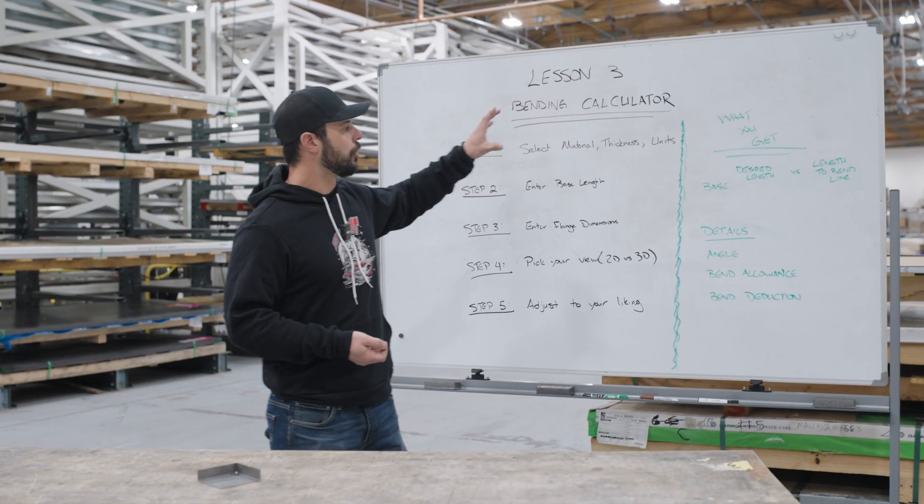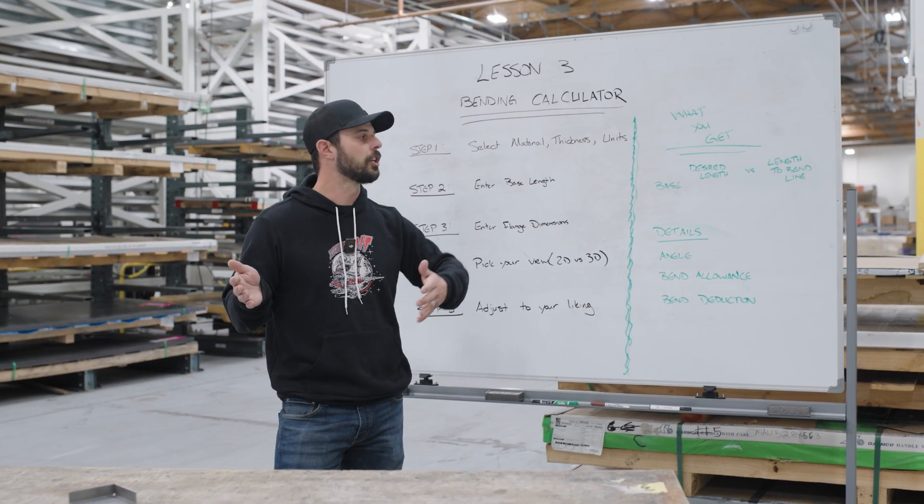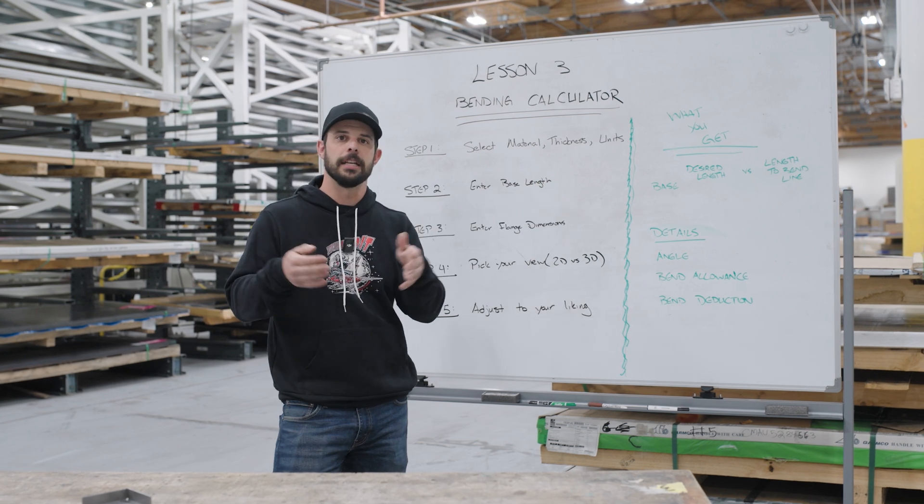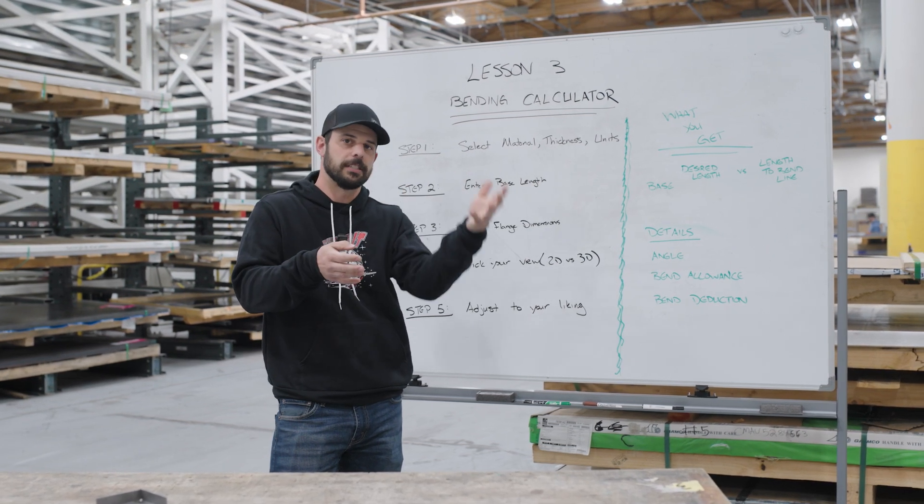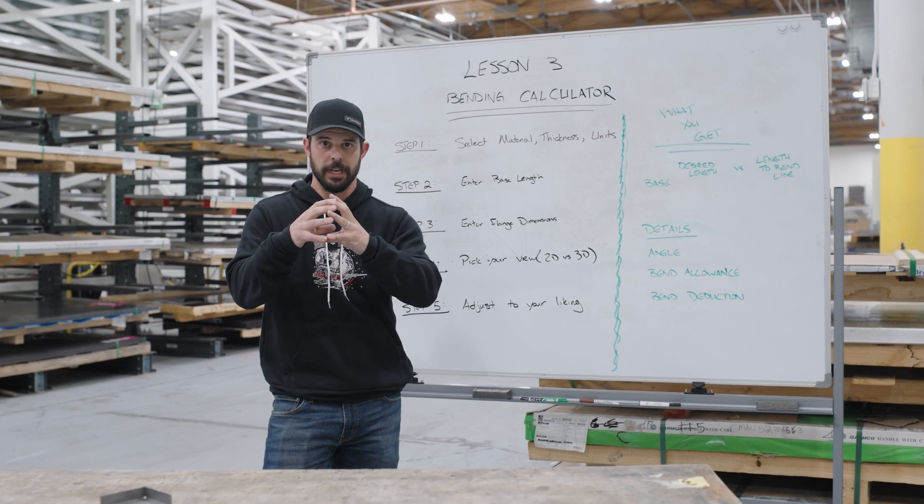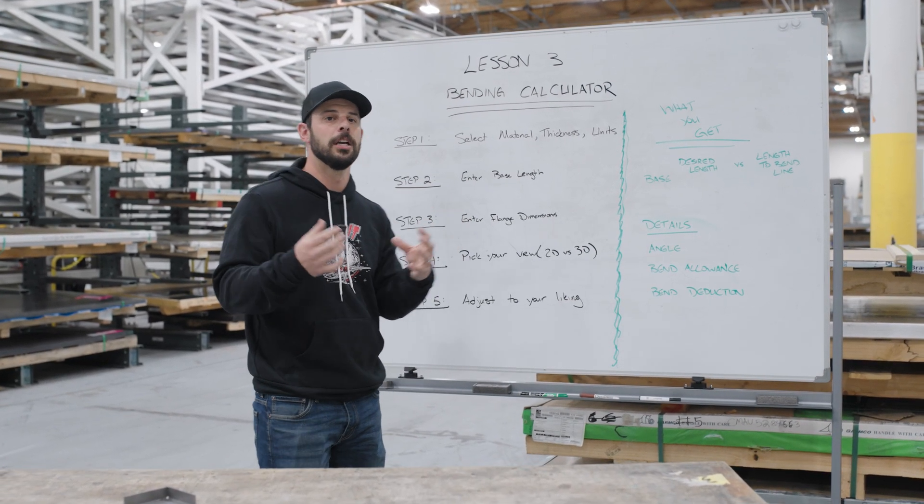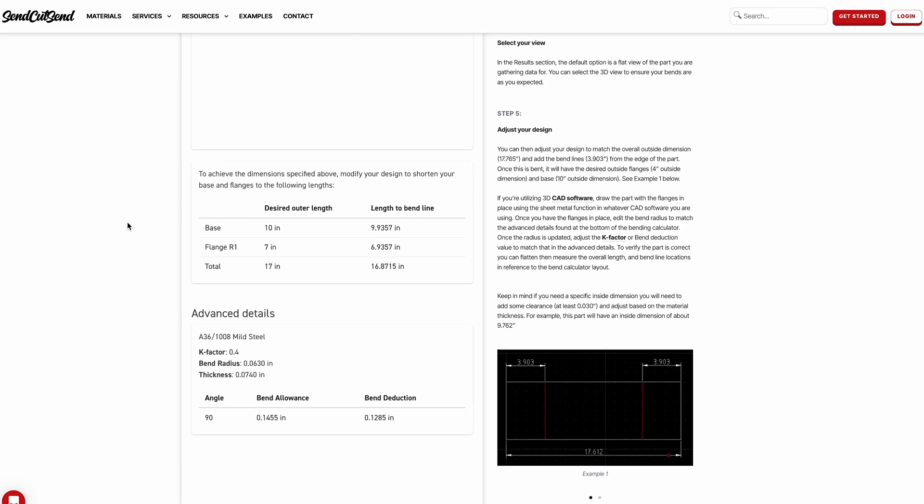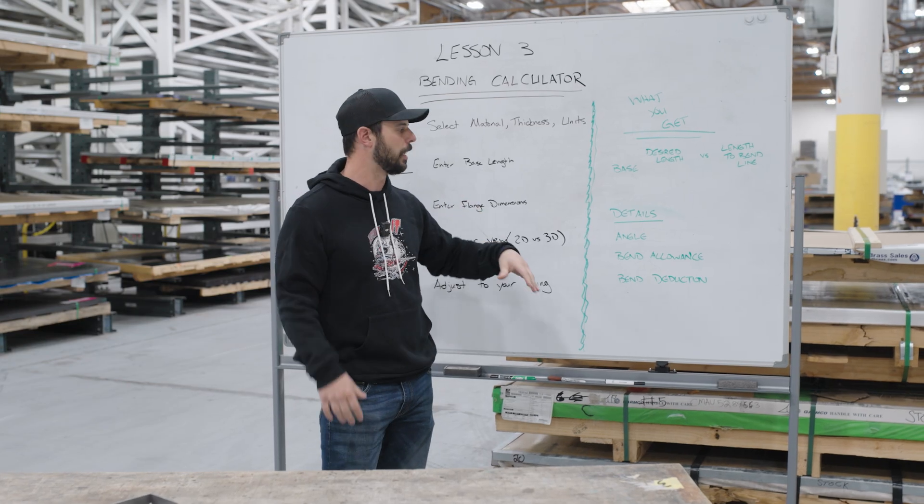You're going to end up having the desired length of that base flange that you put in, say it's 10 inches, and then you're going to end up having the adjusted length to the bend line so that you end up seeing it shrink. When it shrinks based on what we talked about in lesson two with the elongation stretching over that bend area and that tension that we're seeing. So you're going to end up seeing the base length that you wanted and then a shortened base length so it stretches into it.